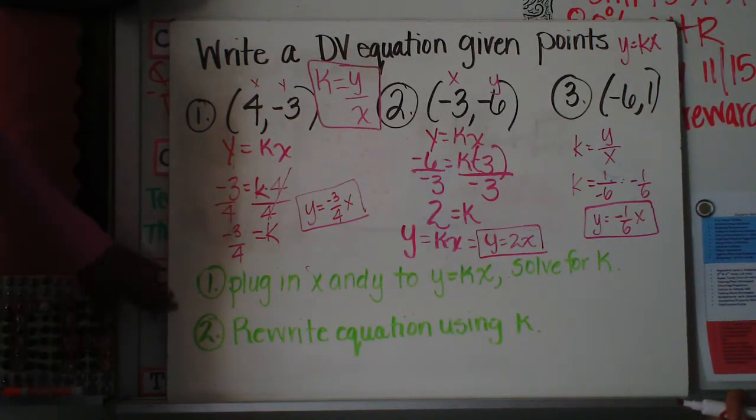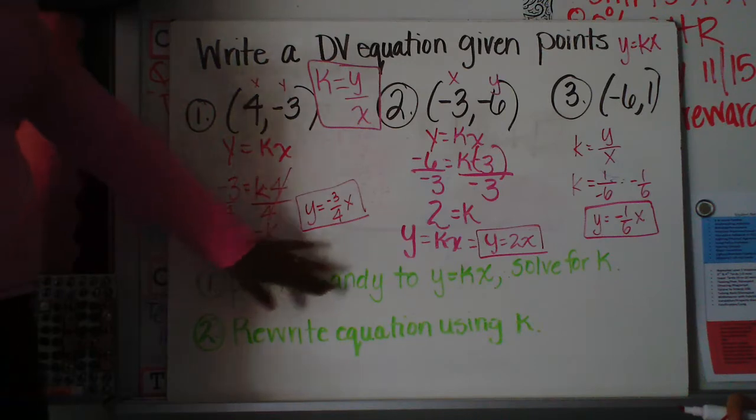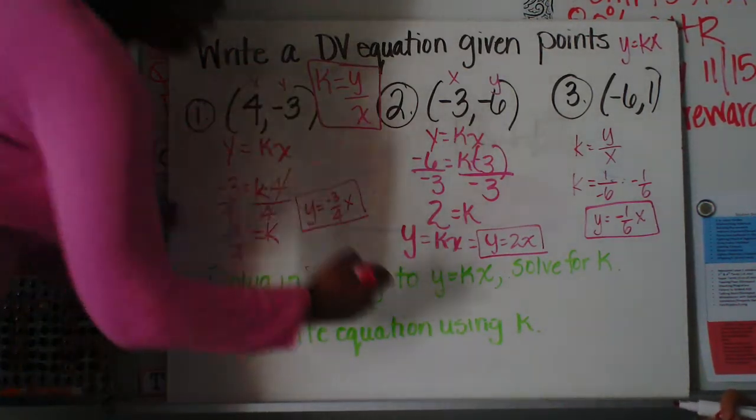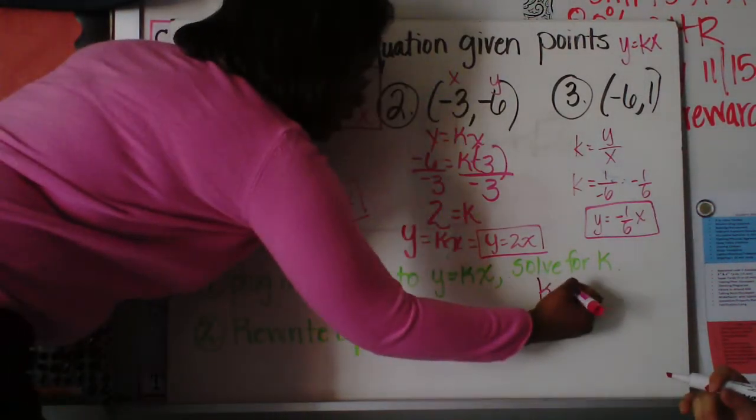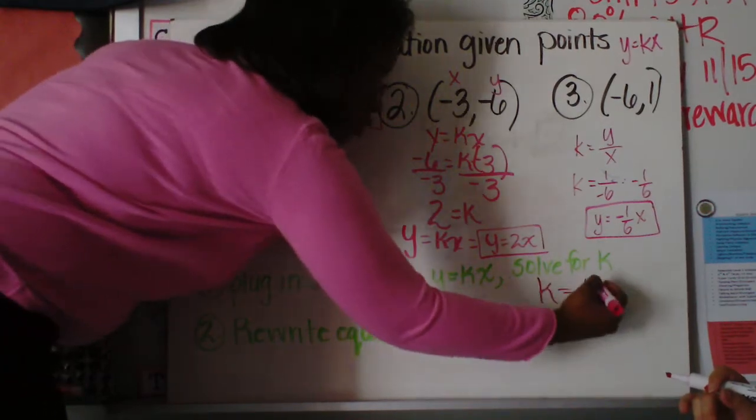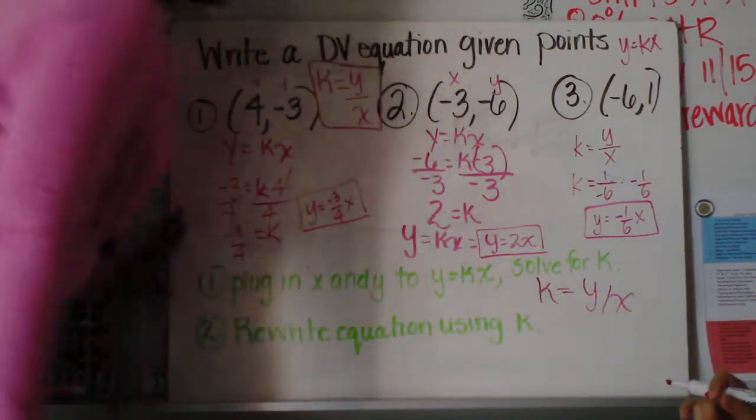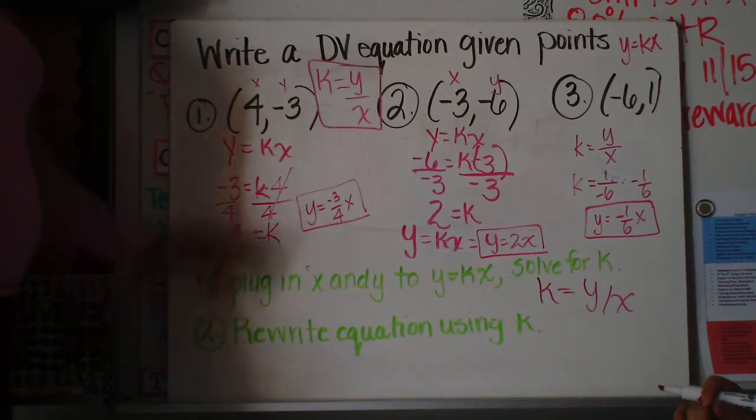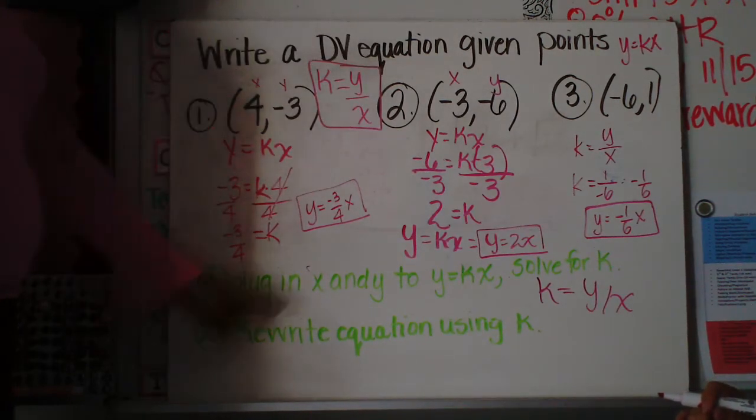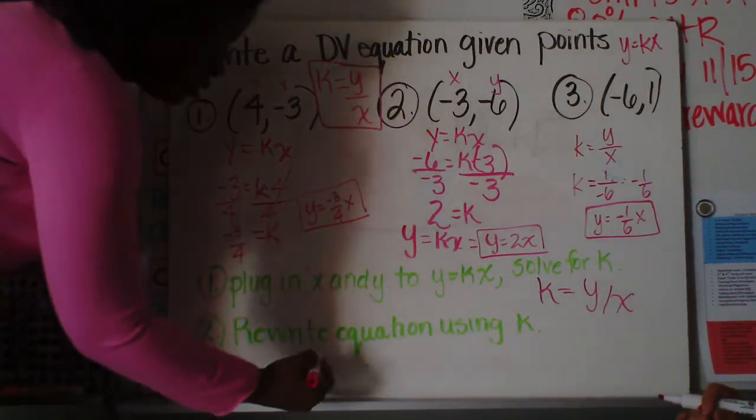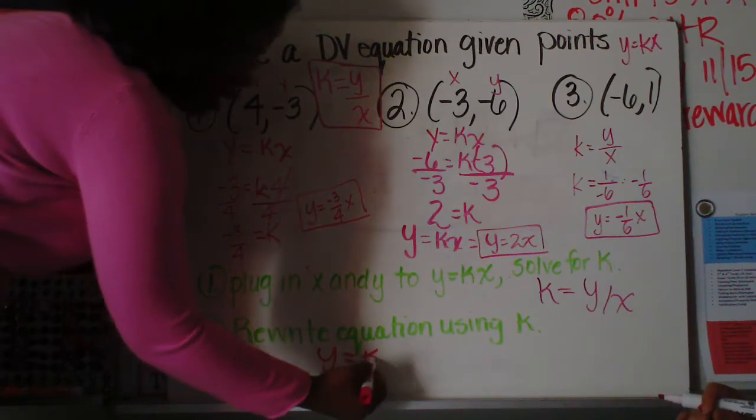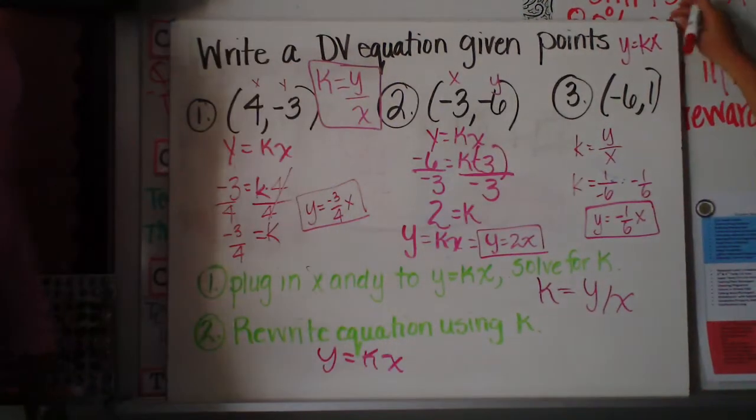So in your notes, just write down these two steps. You want to plug in x and y to solve for k. Or the shortcut way Ms. Hamlet just said was that k is equal to y over x. That'll find your k value. And then to answer the question, you want to rewrite the equation using k. So you want to plug in your k for y equals kx.